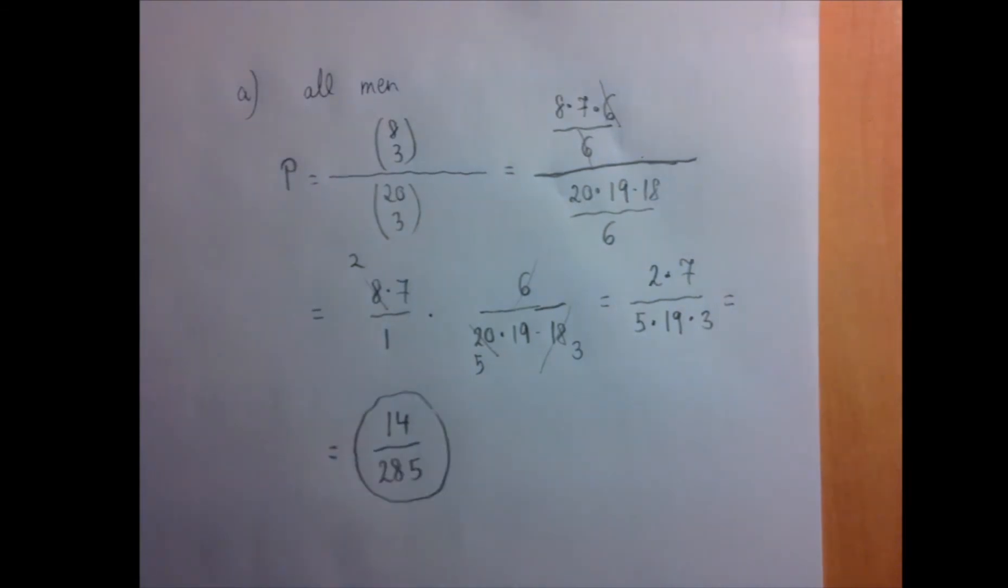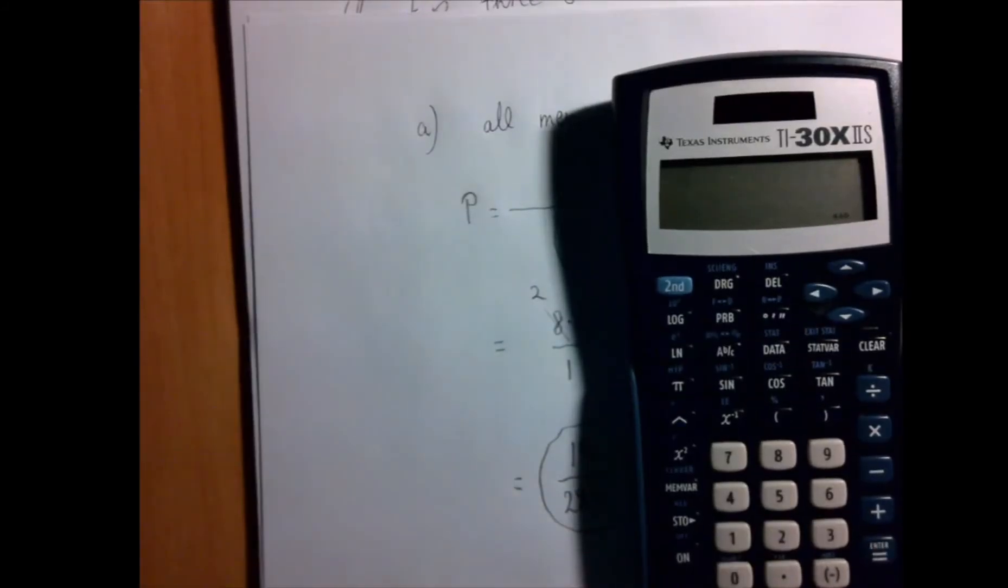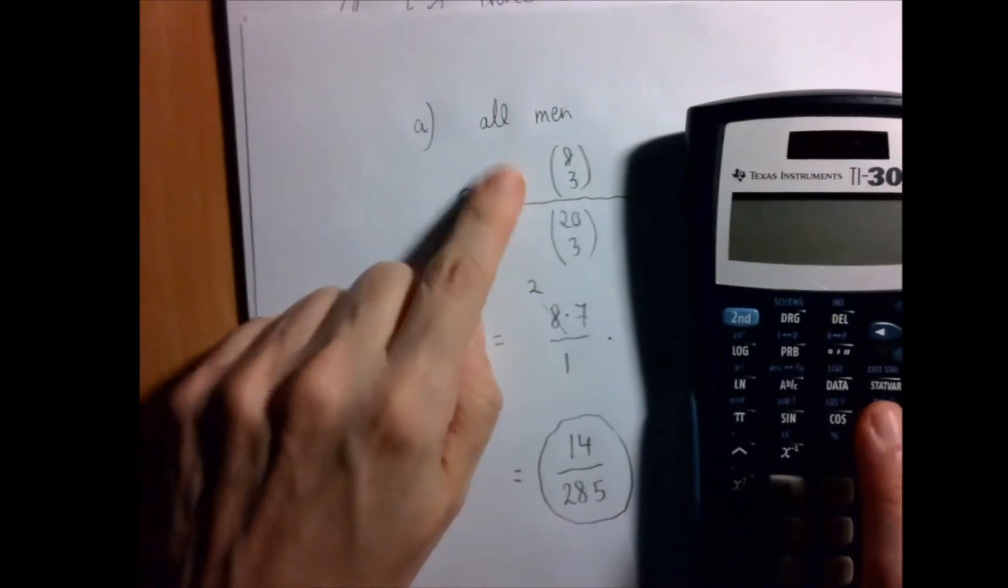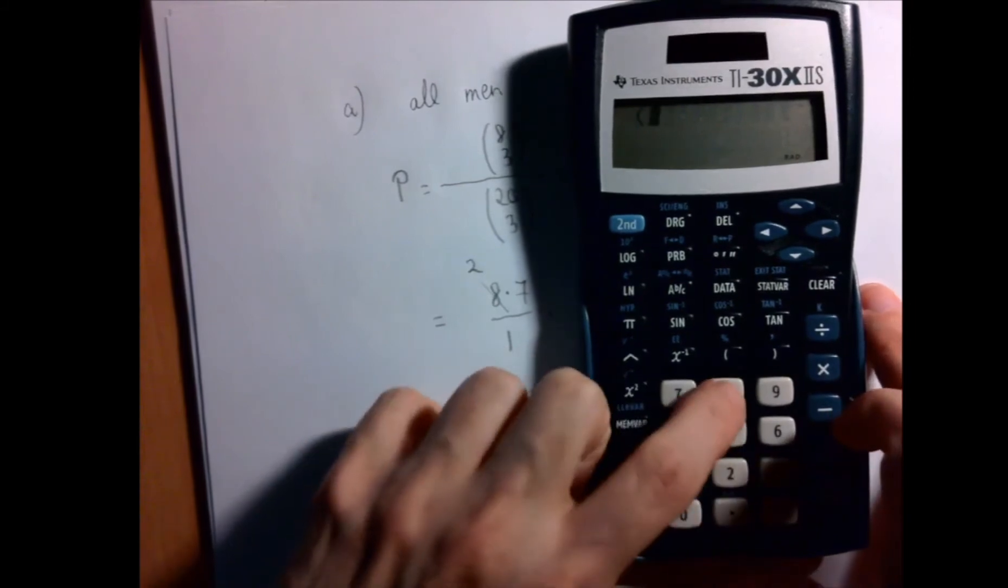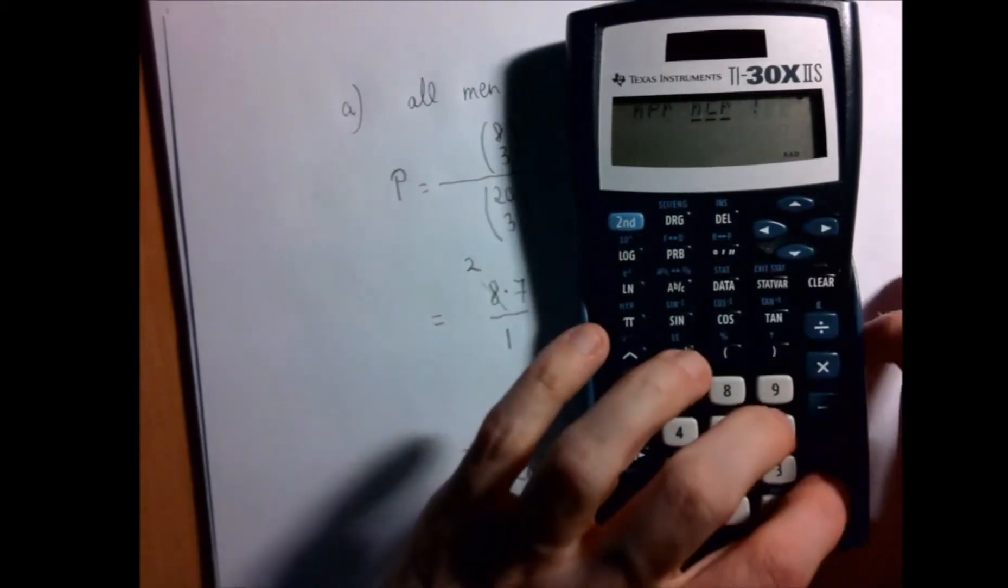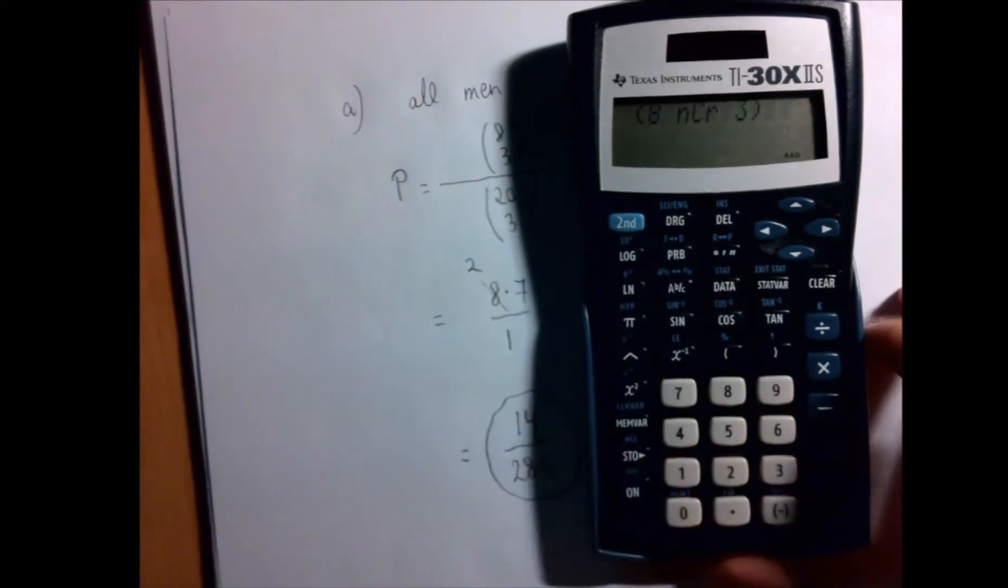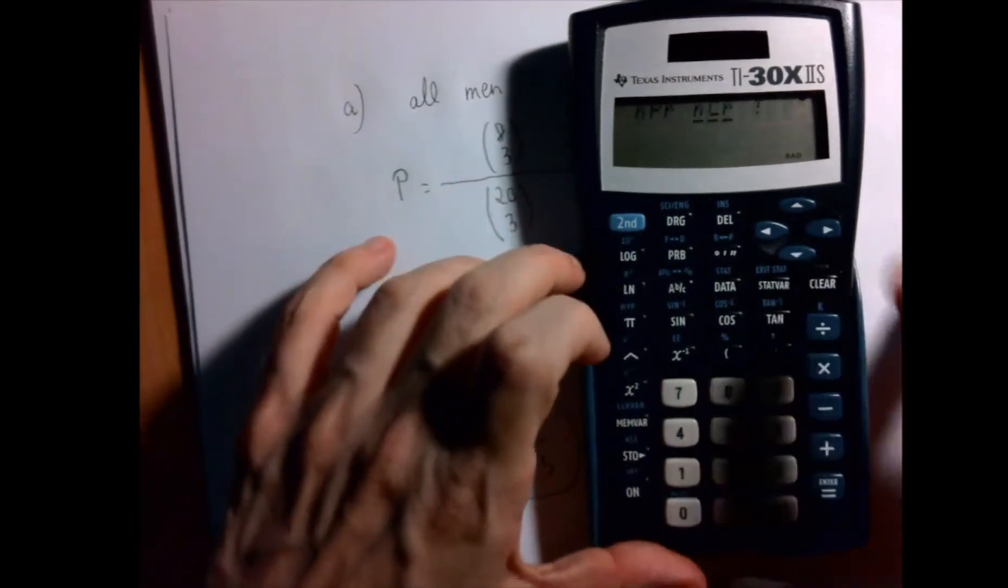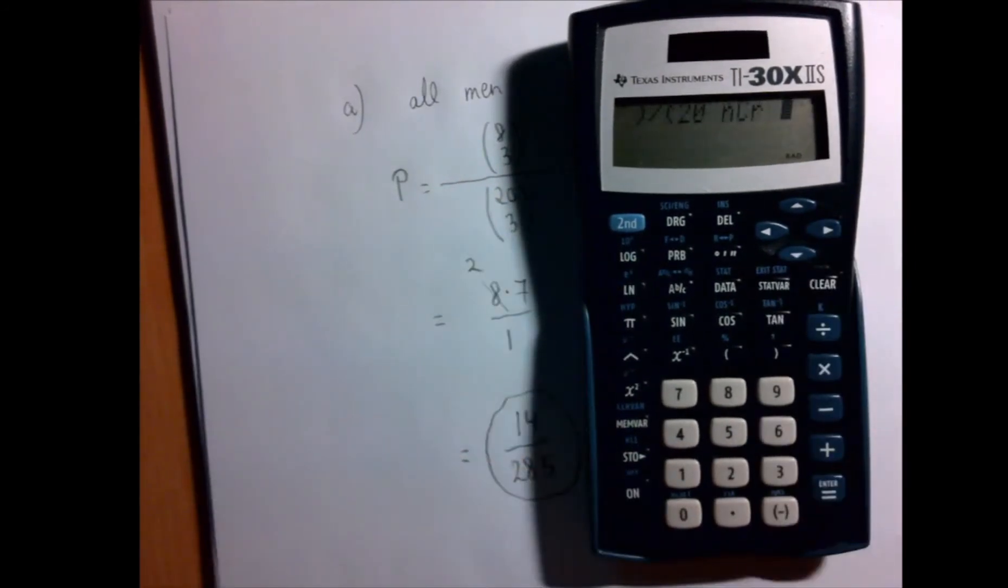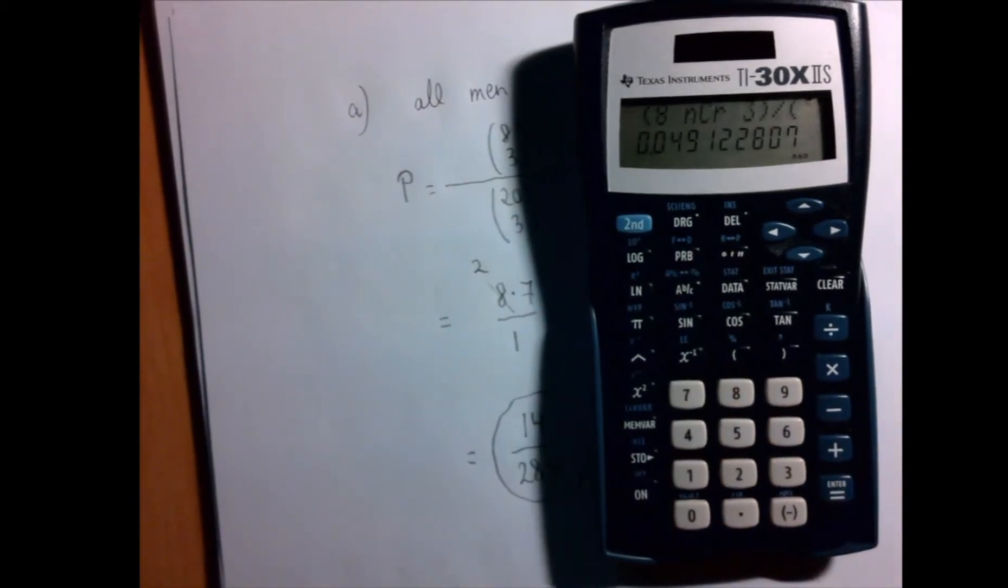Now it might be good practice to check our answer using the calculator. So we think that the answer is 8 choose 3 divided by 20 choose 3. Parentheses open, 8 choose 3, parentheses closed, divided by, parentheses open, 20 choose 3, parentheses closed.